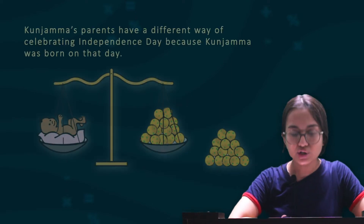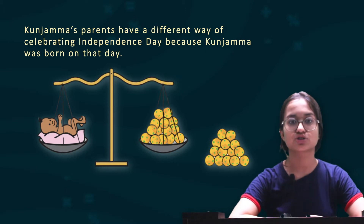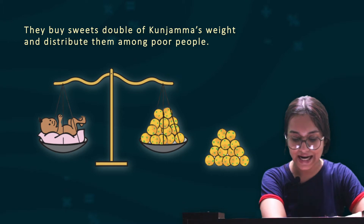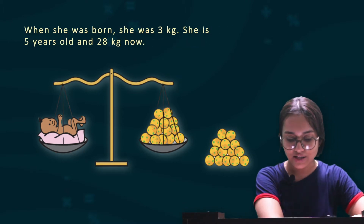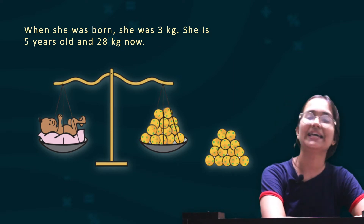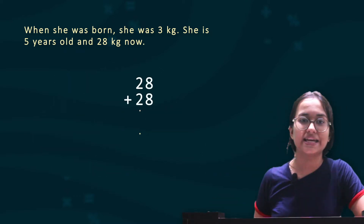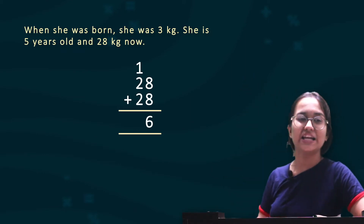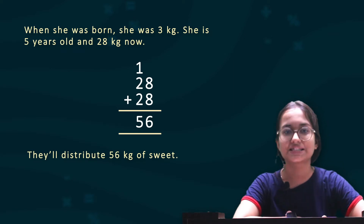Then we have 'Double the Weight.' Kunjama's parents have a special way of celebrating Independence Day because Kunjama was born on that day — they buy sweets double Kunjama's weight and distribute them among poor people. When she was born she was 3 kgs, and now she is 5 years old and weighs 20 kgs. So her parents will weigh 20 plus 20, giving 40 kgs — wait, the calculation shown is 28 plus 28: 8 plus 8 gives 16, carry 1, giving 56 kgs of sweets to distribute.